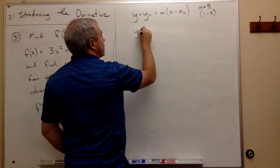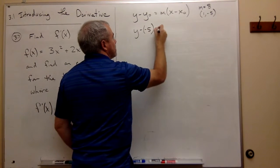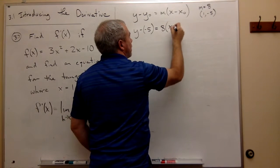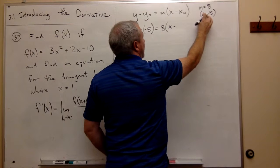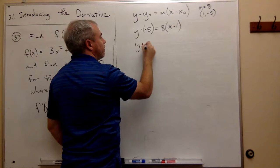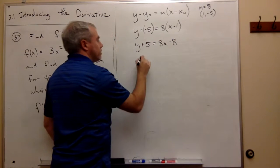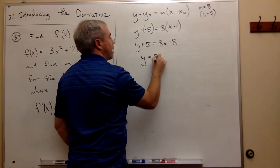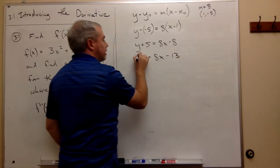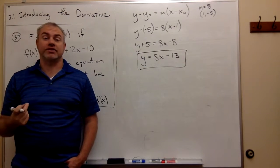So I get y - y₁, which is -5, equals m, which is 8, times x - x₀, which is 1. I get y + 5 = 8x - 8. So I get that y = 8x, and then I subtract 5 from both sides, and I get -13. And I get the equation of the tangent line.